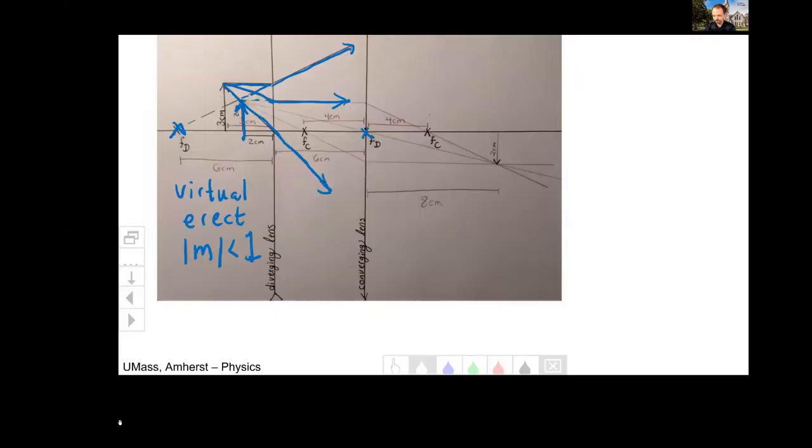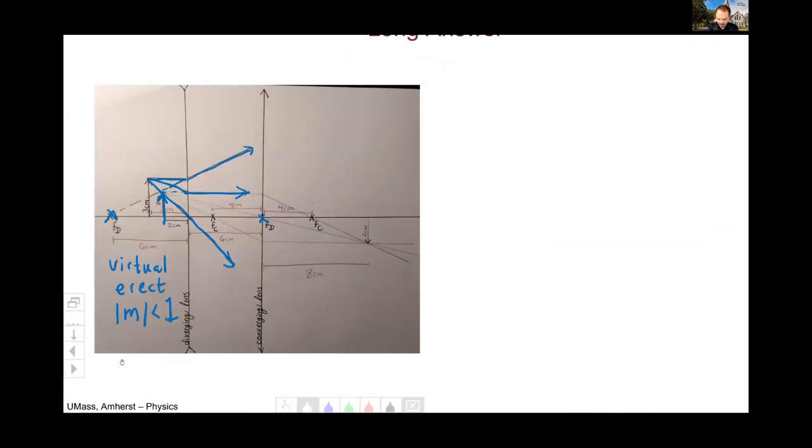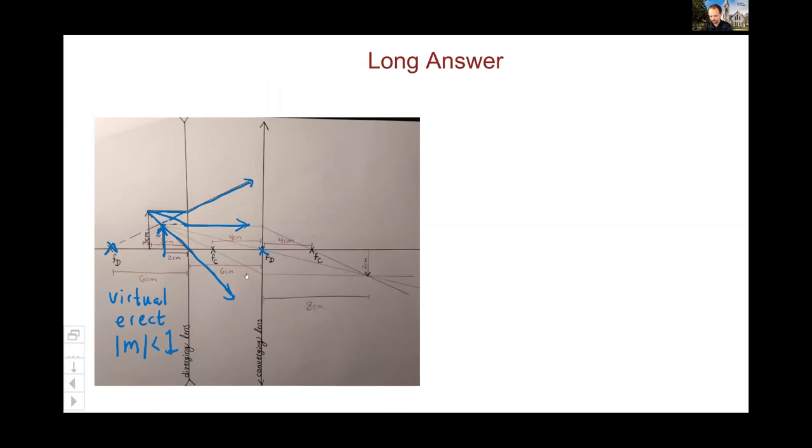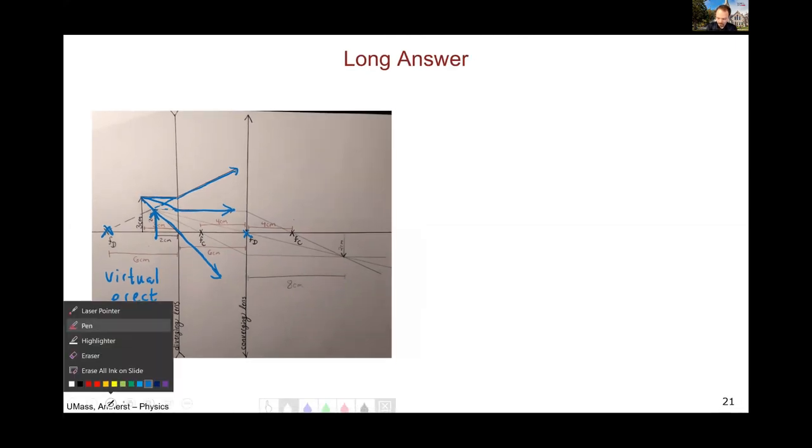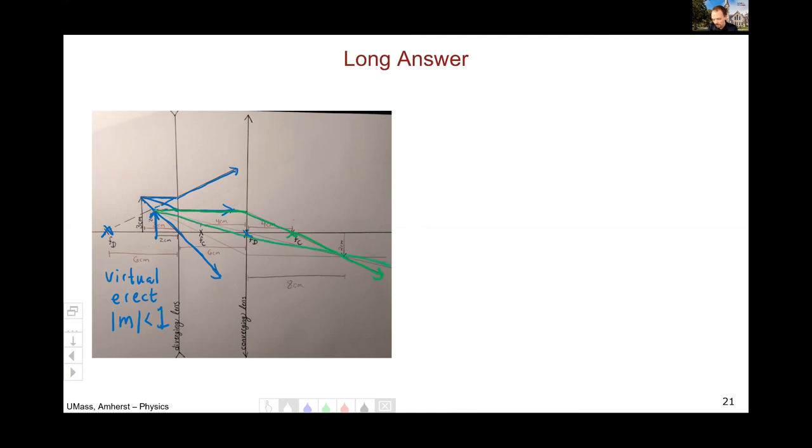And then for the second part, we look at the converging lens using this as our object. So we come in parallel and then out through this converging focal point. We go straight through the center. Then we come in through the remaining converging focal point and out parallel. And the result is a real inverted image with a magnification less than one.